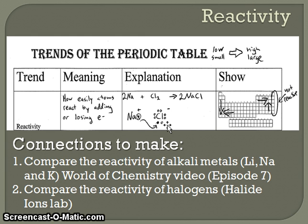For connections to consider making with this trend, please refer back to the World of Chemistry video series episode seven for the demonstration which showed differing levels of reactivity for lithium, sodium, and potassium. Also, a comparison of the reactivity of different halogens investigated in the halide ions lab. The trend shown on the periodic table for metallic elements: increasing reactivity moving down and to the left. For non-metallic elements, reactivity increases as you move to the right and up. The noble gases, the right-most column on the periodic table, are not reactive, so they have very low reactivity.